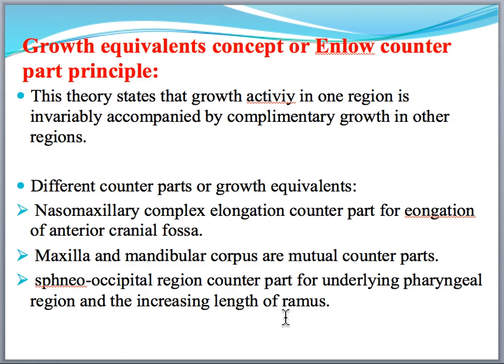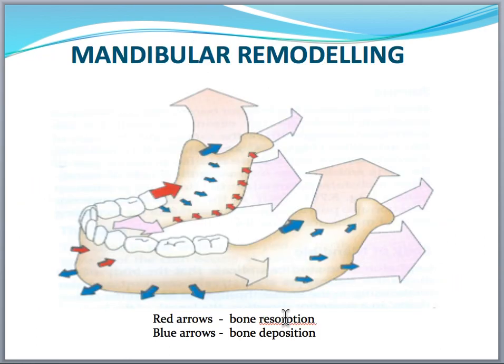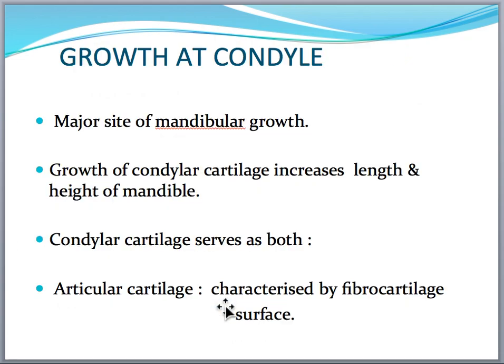Mandibular remodeling takes place by resorption and bone deposition, shown in this picture by red and blue arrows. You have to individually describe each part — how resorption and deposition take place at each particular area of the mandible.